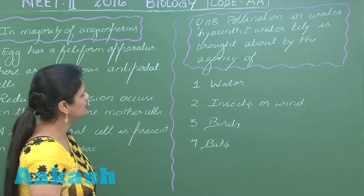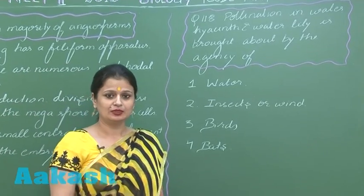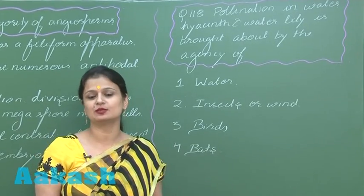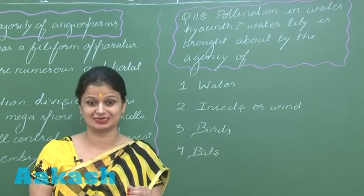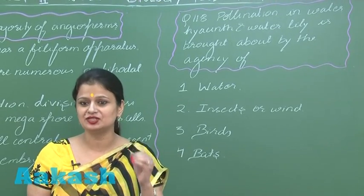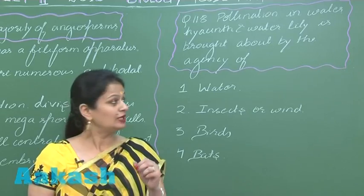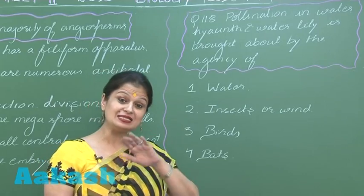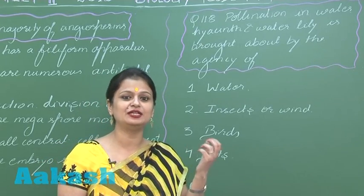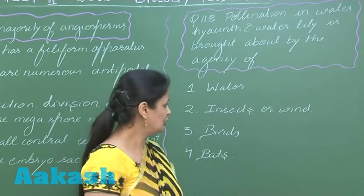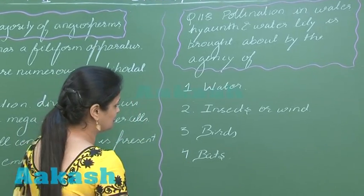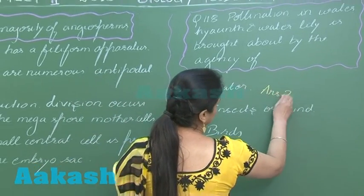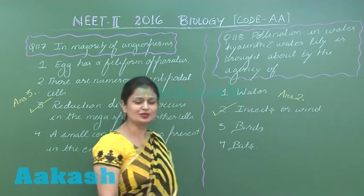Question number 118 is about pollination in water hyacinth and water lily. Now, water hyacinth and water lily are water plants, but in these plants the pollinating agency is insects. In the case of water lily, if insect pollination fails then wind pollination occurs. So we need the option that includes both insects and wind — the right option is option number two.